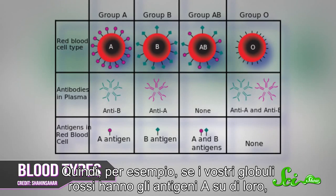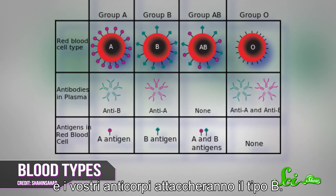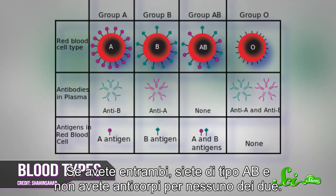For example, if your red blood cells have A antigens on them, then your blood type is A, and your antibodies would attack type B. If you have B antigens on your blood cells, then you're type B, and you have antibodies for type A.